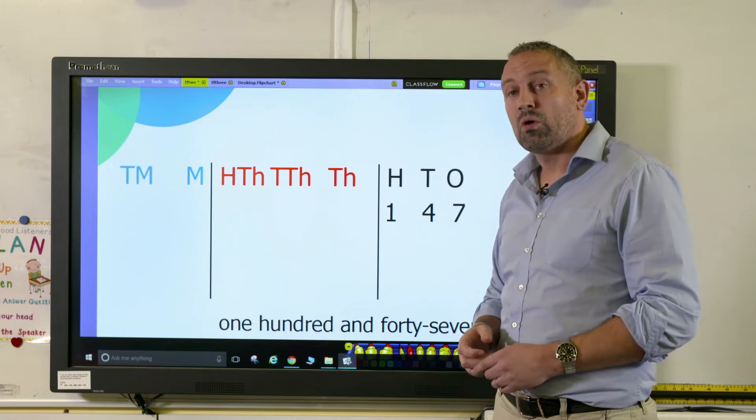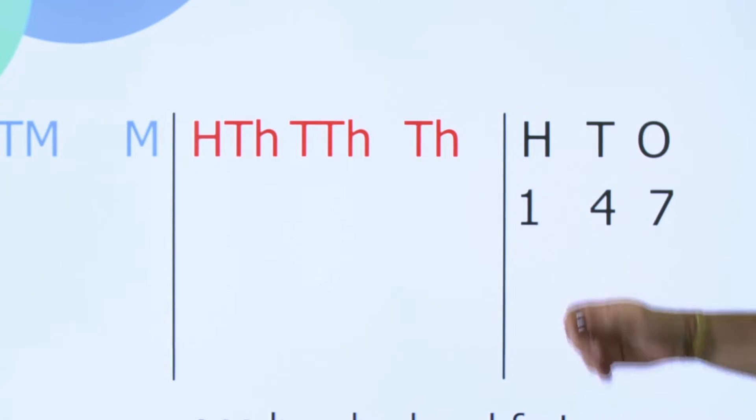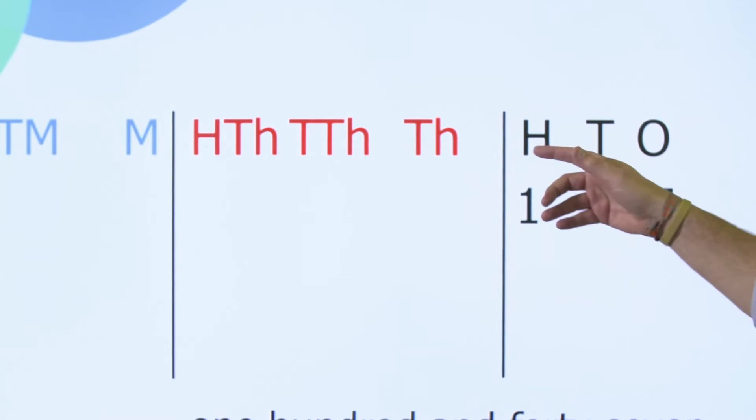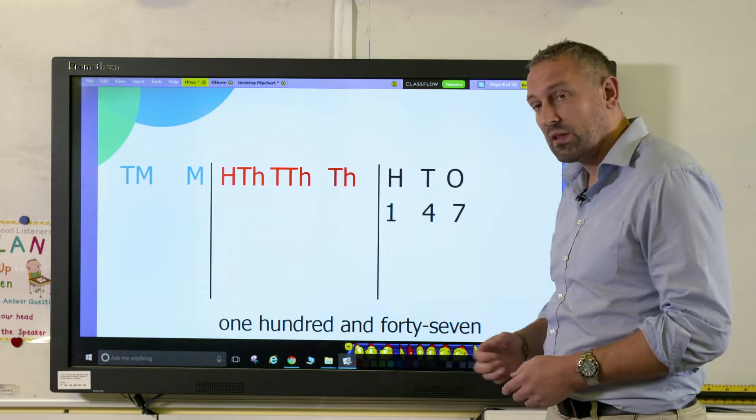So here we have the number 147. The one is in the hundreds column, the four is in the tens column, and the seven is in the ones column—147, and that's how it's written there.